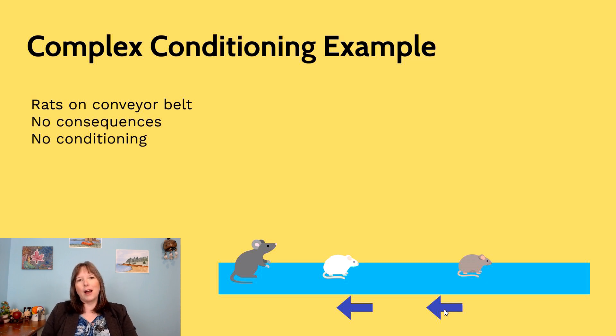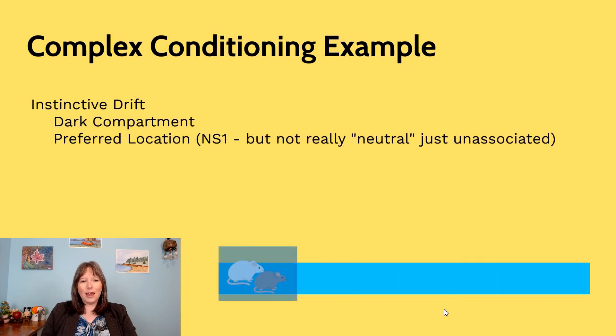They can eat, they can look for mates and sniff things. They're fine, they're not too stressed out but they're not having the time of their life either. Then they can add a component of instinctive drift. We know that rats like dark places.